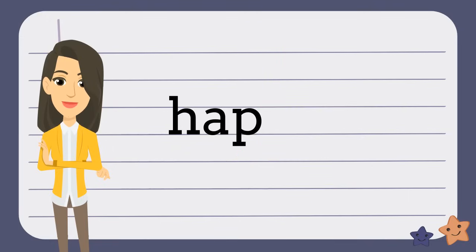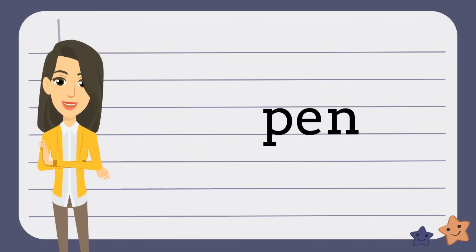The first part is H-A-P. We know that if a syllable ends with a consonant, the vowel is short, so we would pronounce this HAP. The second part is P-E-N. We know that if a syllable ends with a consonant, the vowel is short, so we would pronounce this PEN. When we put it together, we get the word HAPPEN.